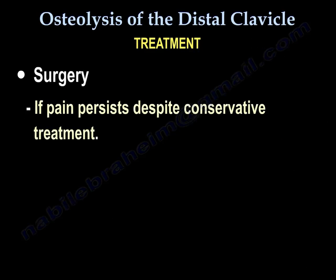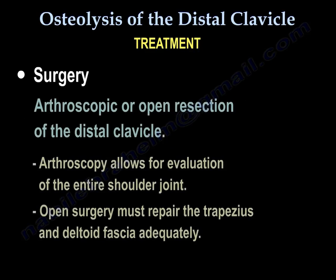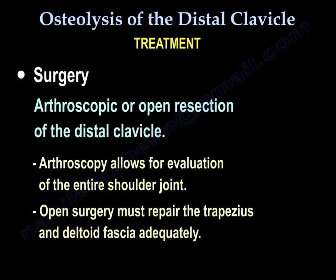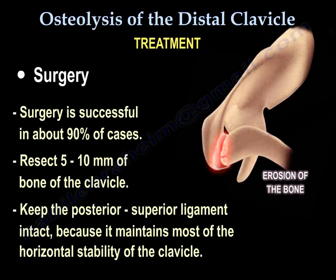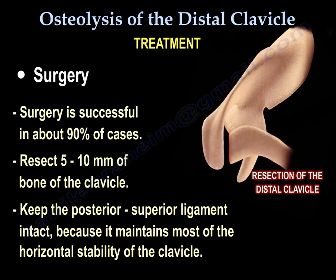Surgery is performed if pain persists despite conservative treatment. The patient will have arthroscopic or open resection of the distal clavicle. Arthroscopy allows evaluation of the entire shoulder joint, while open surgery must adequately repair the trapezius and deltoid fascia. Surgery is successful in about 90% of cases. Resect 5 to 10 mm of the clavicle bone, keeping the posterior superior ligament intact to maintain most of the horizontal stability of the clavicle.